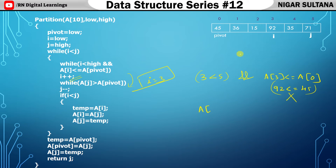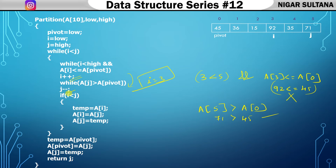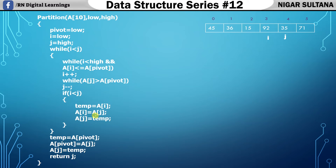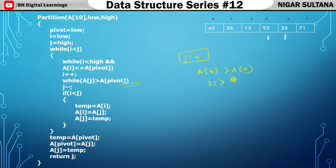Now check the j condition: is a[j] greater than a[pivot]? j is five, a[5]=71, which is greater than 45 — true, so decrement j. J was five, now it becomes four. In the array diagram, j has shifted from position five to position four. Running the j while loop again: is a[4]=35 greater than 45? This is false, so stop decrementing j.